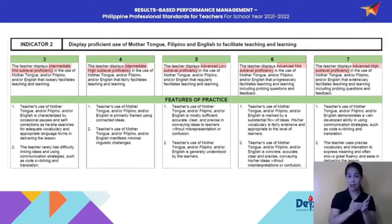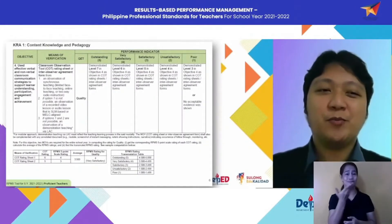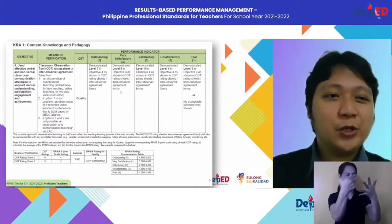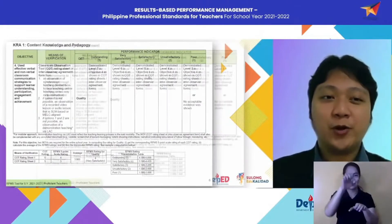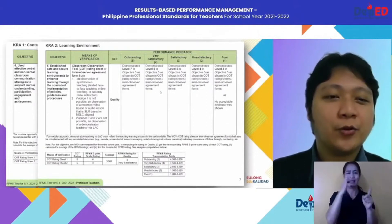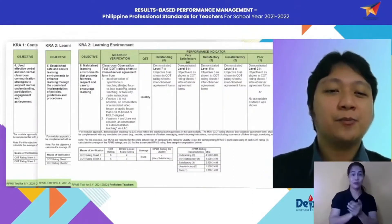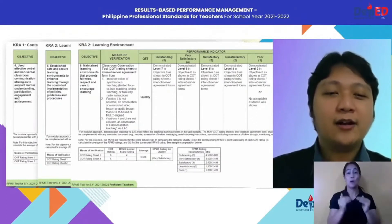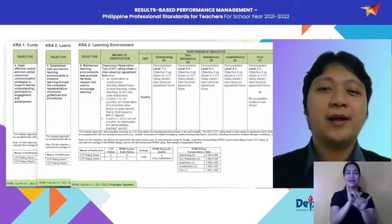On your screen now is our next classroom observable indicator: Objective 4, use effective verbal and non-verbal classroom communication strategies to support learner understanding, participation, engagement, and achievement. We also have Objective 5, established safe and secure learning environments to enhance learning through the consistent implementation of policies, guidelines, and procedures. And Objective 6, maintain learning environments that promote fairness, respect, and care to encourage learning. These objectives also follow the same set of means of verification and performance indicators.